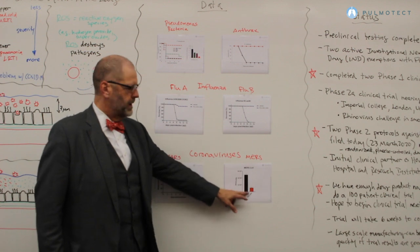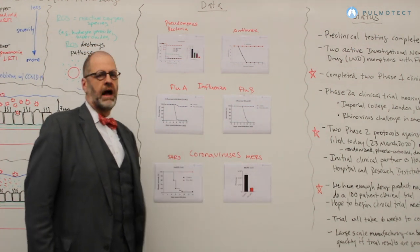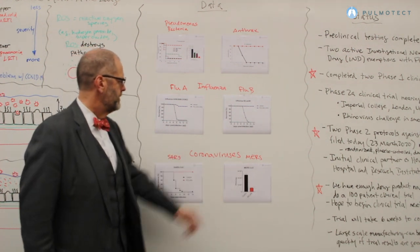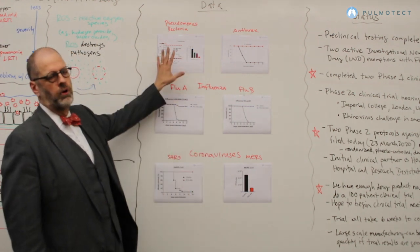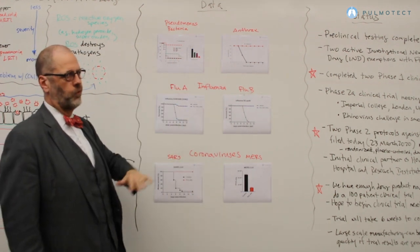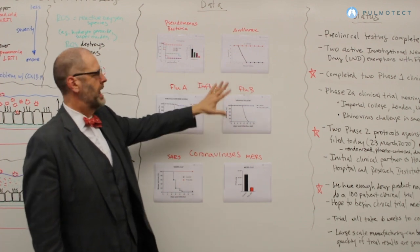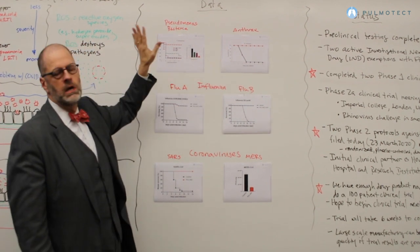We also see a big reduction in MERS viruses within that model. But it's not a surprise to us, because actually this whole approach is pathogen agnostic. It works for sort of everything we've thrown at it, from anthrax to flu to bacteria.